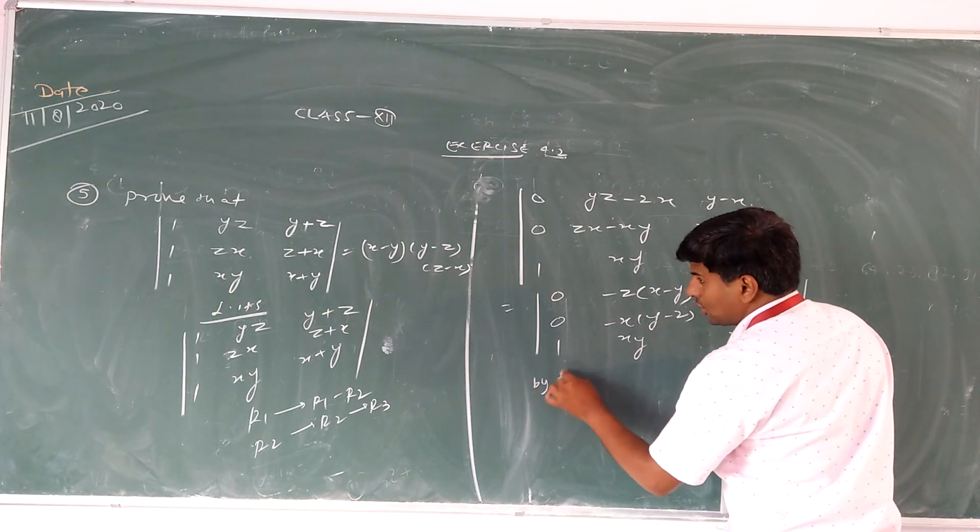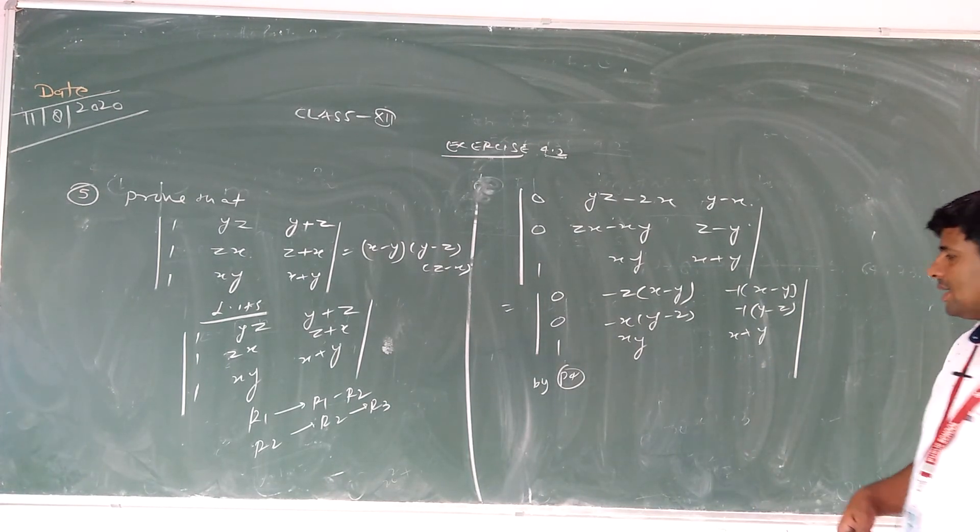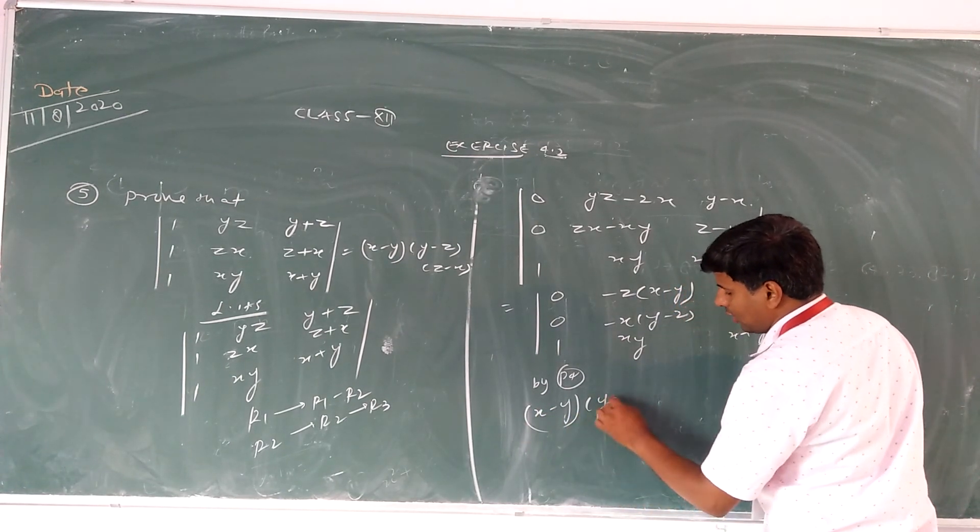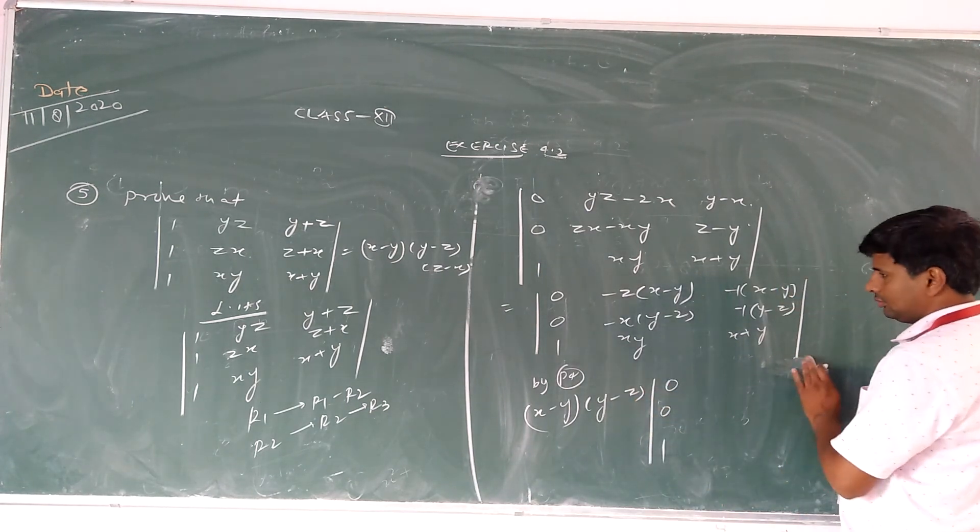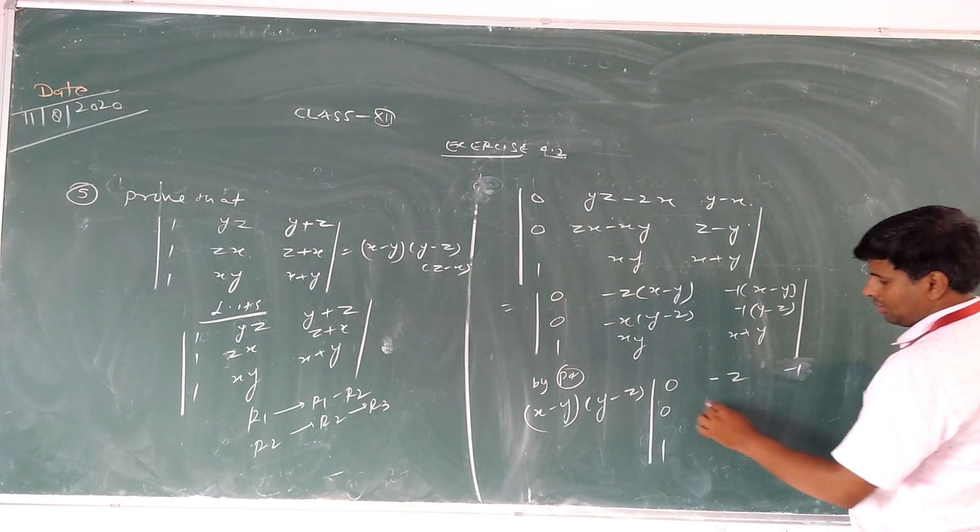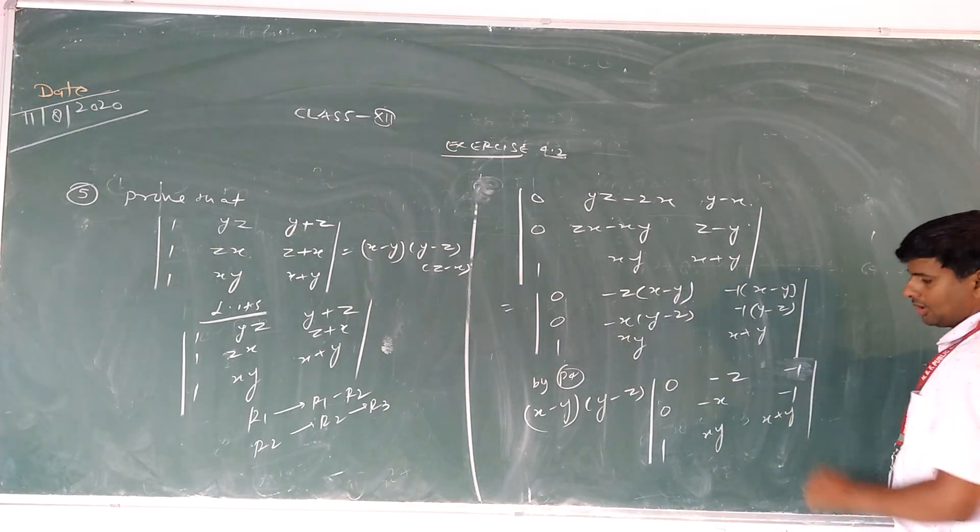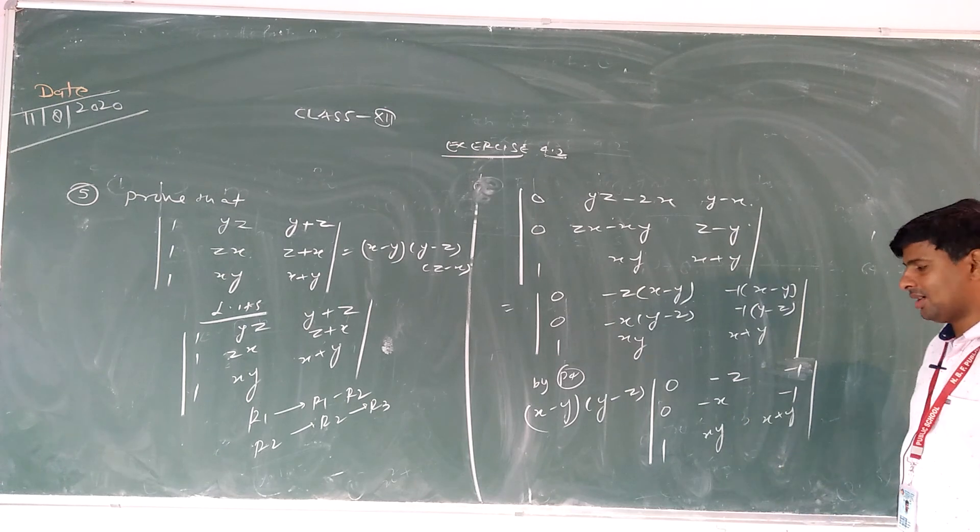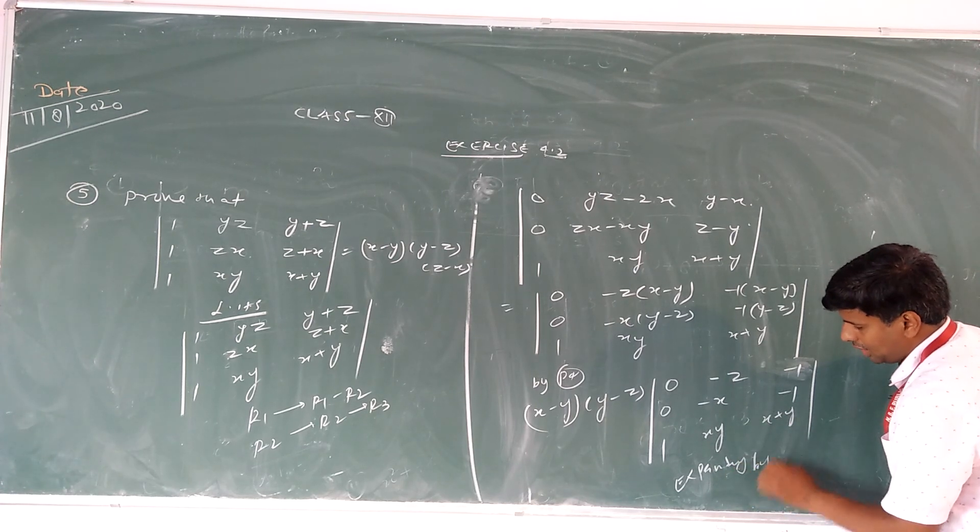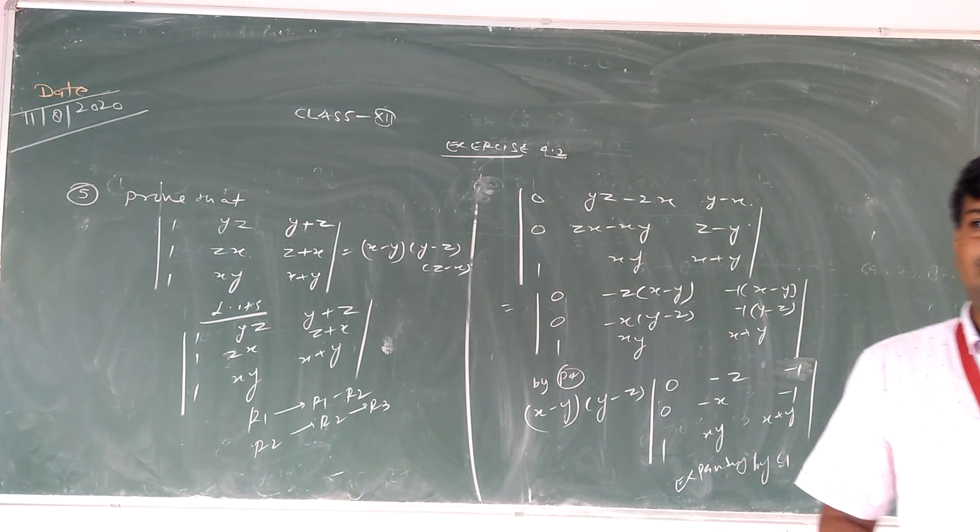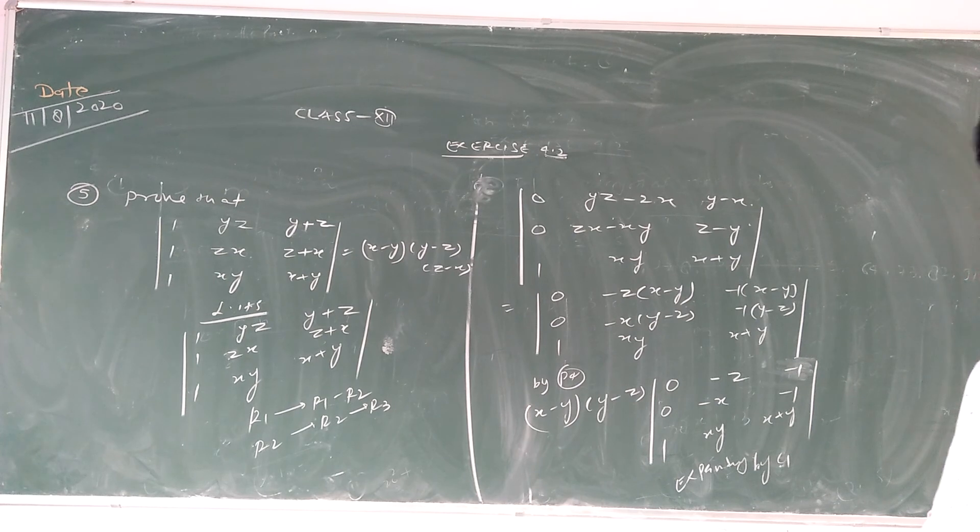By using property P4, from second column what is common? That is x - y and y - z. So we get (x - y)(y - z) times the determinant. Then after zeros are present in first column, so we can expand by first column. Thus we obtain the required result.